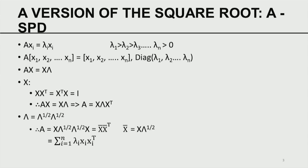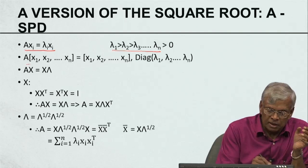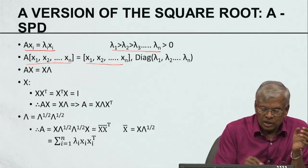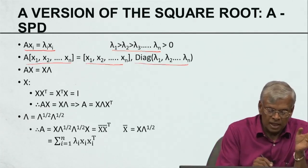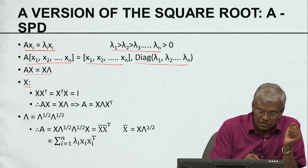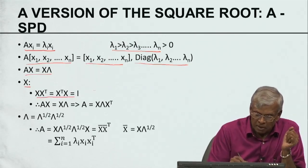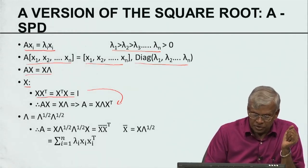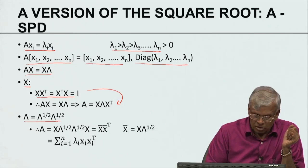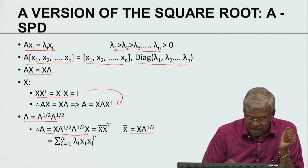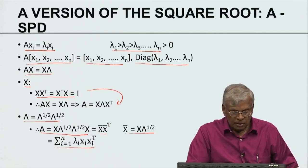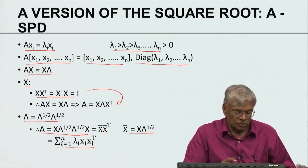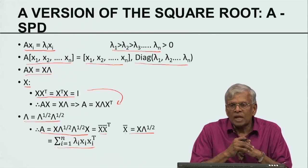Let me talk about the covariance matrix properties. If A is a matrix, A X_i equals lambda_i X_i, and if A is symmetric positive definite, all the Eigen values are positive. This can be written succinctly as A X_1...X_n equals X_1...X_n times a diagonal matrix of eigenvalues. The matrix X is orthogonal, and by exploiting this property I can get a multiplicative decomposition: A equals X bar times X bar transpose, which is also equal to the sum of lambda_i times X_i X_i transpose. This is the crux of the Eigen decomposition.